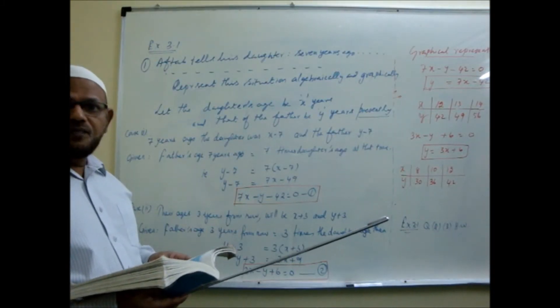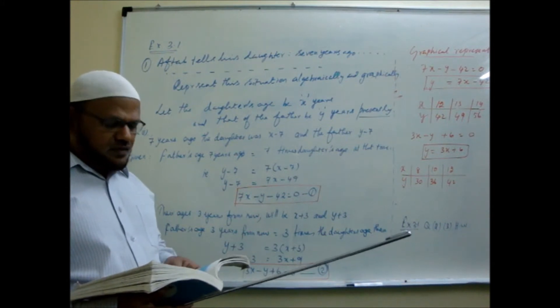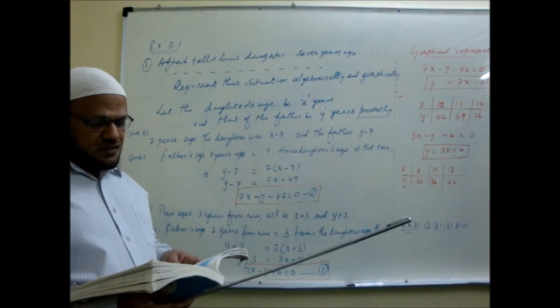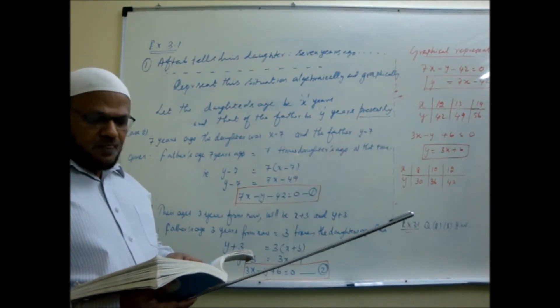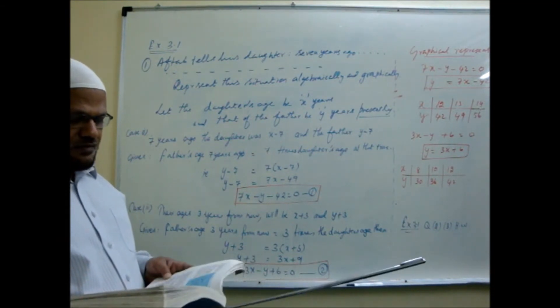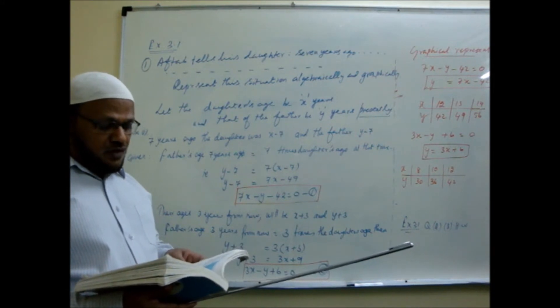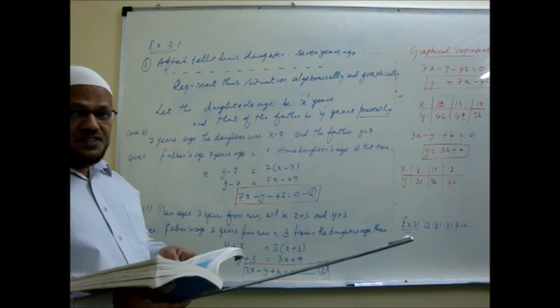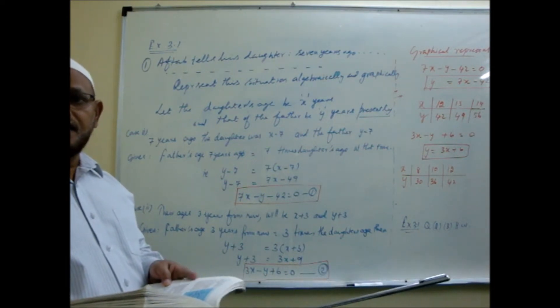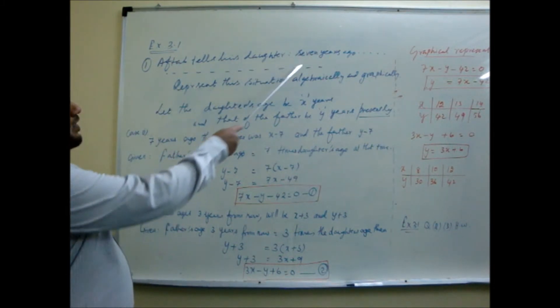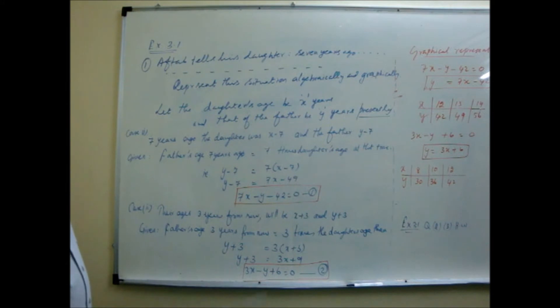From exercise 3.1, question number 1 we do. I read out an interesting question here. A father tells his daughter, 7 years ago, I was 7 times as old as you were then. Also, 3 years from now, I shall be 3 times as old as you will be. Represent the situation algebraically and graphically. Like the previous question. You write the question. Of course, you are going to see how to express algebraically.